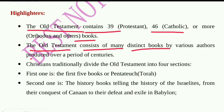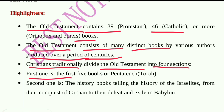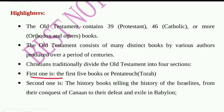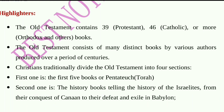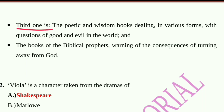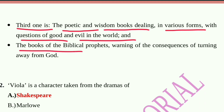The Old Testament consists of many distinct books from various authors produced over centuries. Christians traditionally divide it into four sections: first, the five books or Pentateuch/Torah; second, the history books telling the story of the Israelites from the conquest of Canaan to exile in Babylon; third, the poetic and wisdom books; and fourth, the books of the biblical prophets.